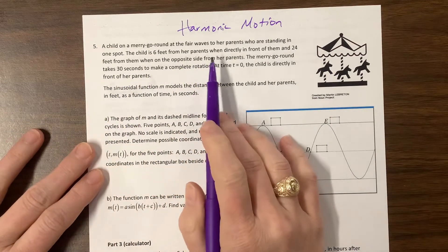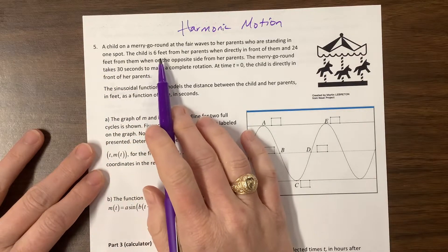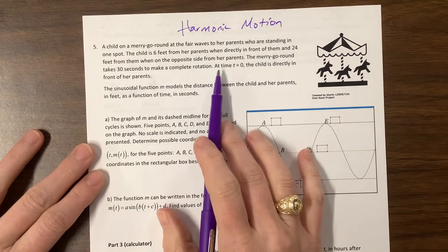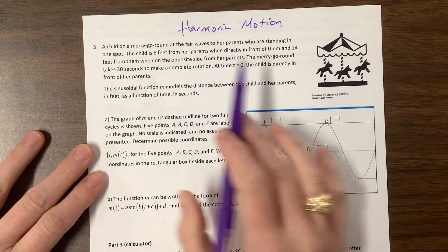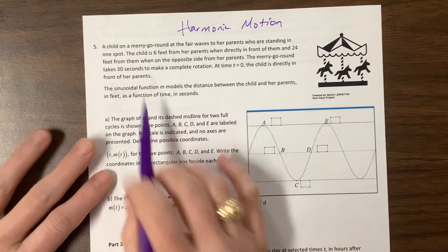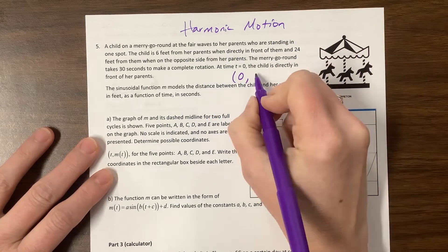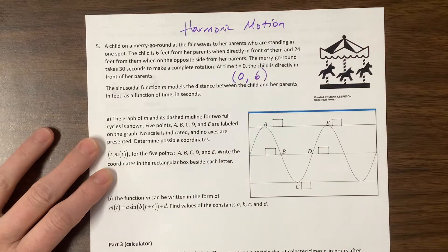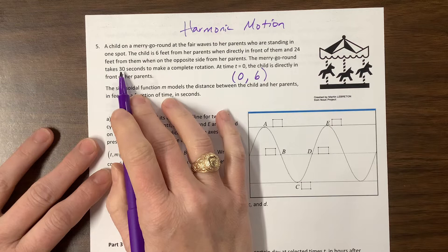A child on a merry-go-round at the fair waves to her parents who are standing in one spot. The child is six feet from the parents when directly in front of them and 24 feet away from them on the opposite side from her parents. The merry-go-round takes 30 seconds to make a complete rotation. At time t equals zero, the child is directly in front of her parents.